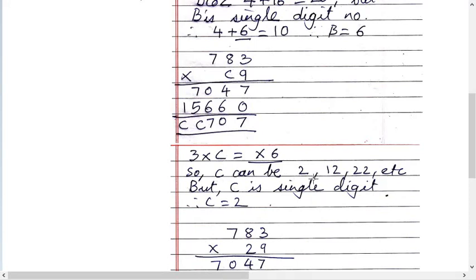So C can be 2, 12, 22, etc. Right? Why? Because before 12 there is no other number which when multiplied will be divisible by 3. Right? Means 2 is there and then directly 12.